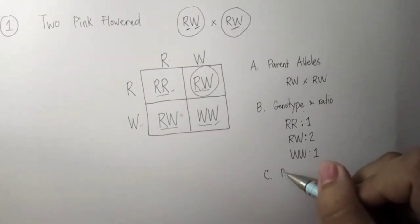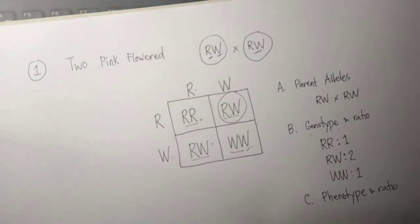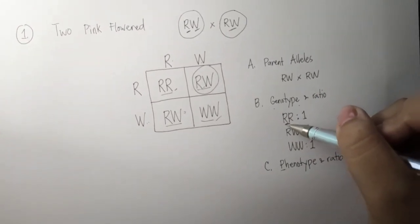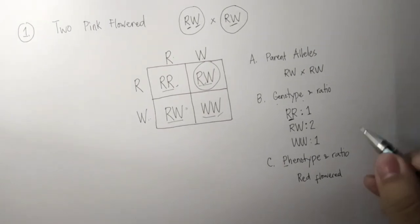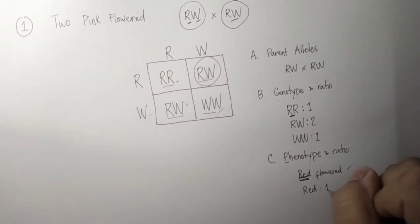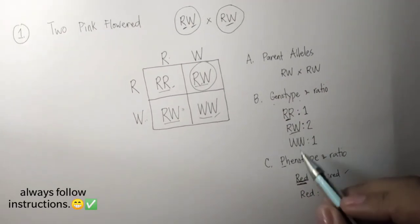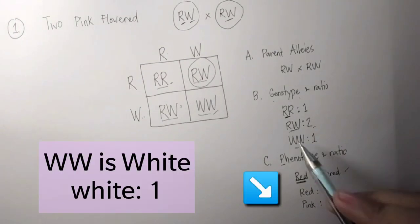For letter C, we identify the phenotype and ratio. Phenotype is the physical characteristic corresponding to each genotype. RR gives red-flowered four o'clock plants — red, with a ratio of 1. RW gives pink flowers, with a ratio of 2. WW gives white flowers, with a ratio of 1.